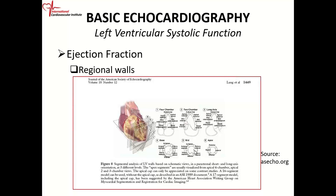At the mid-cavity level where we have the papillary muscles — the anterior lateral papillary muscle and the posterior medial papillary muscle — we divide the heart into six segments or six regional walls. We have the anterior on top and the inferior at the bottom. The lateral wall is divided into an anterior lateral wall, because this portion is closer to the anterior wall, and an inferior lateral wall. The septum is also divided into two segments: the inferior septum and the anterior septum, because it's closer to the anterior wall.